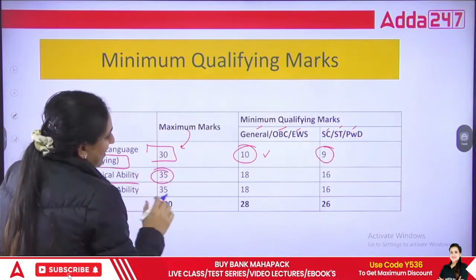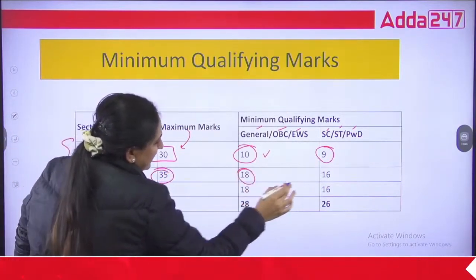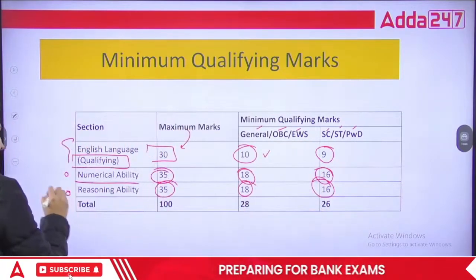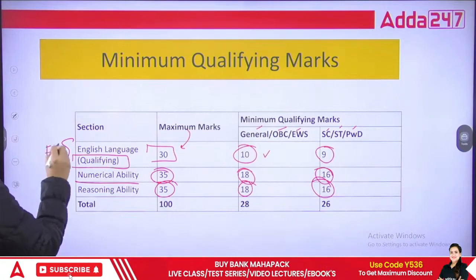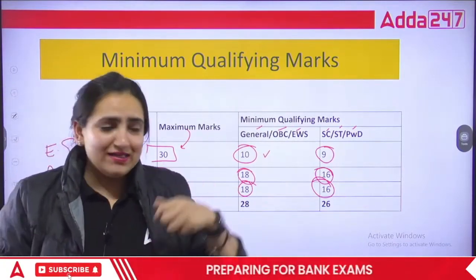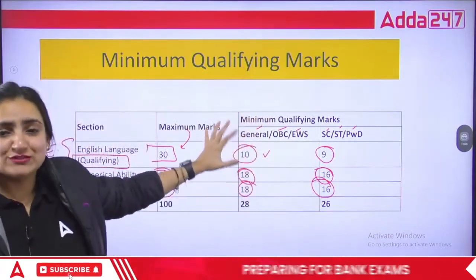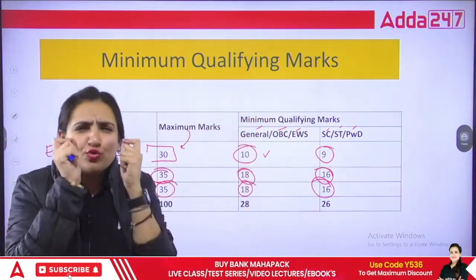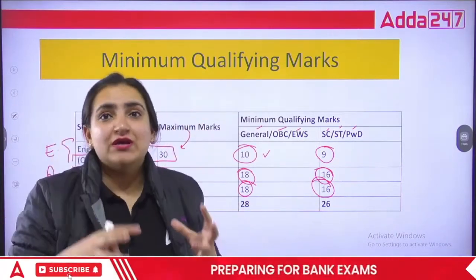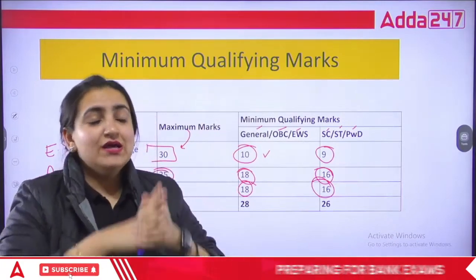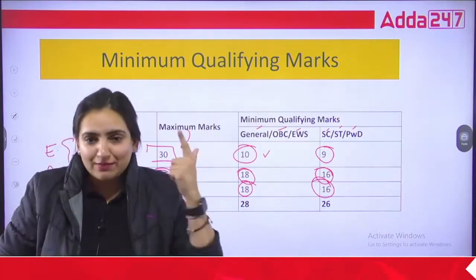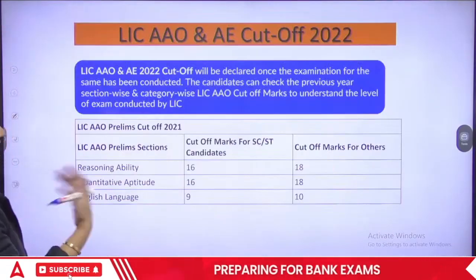So guys, now you all know the pattern — prelims, mains, and the minimum qualifying marks. You have to make sure you note that there is a good number of vacancies — around 300 vacancies — which I think makes it very possible for each one of you to grab the opportunity.